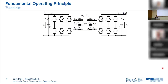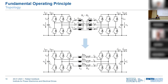Let's start with some fundamental operating principles of the DAB3. We see the topology depicted here with two active three-phase bridges on either side of the medium frequency transformer, and at the terminals you can see the DC link capacitors. To describe the electrical behavior of this topology we can simplify it so that we are only left with the leakage inductance and the winding resistance for each phase.